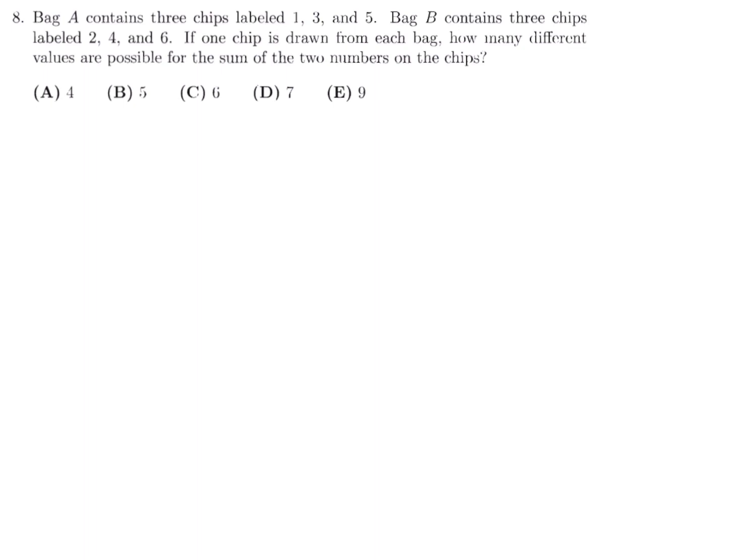Bag A contains three chips labeled 1, 3, and 5. Bag B contains three chips labeled 2, 4, and 6. If one chip is drawn from each bag, how many different values are possible for the sum of the two numbers on the chips? So since there's only a few of them, we can really just write out all the combinations. This is bag A, this is bag B. So if we have one chosen from bag A, we can choose two from bag B, or one and four, or one and six. The others: if we choose three from bag A, we can choose two, four, or six from bag B. And then the final scenario is five from bag A, and two, four, and six from bag B.